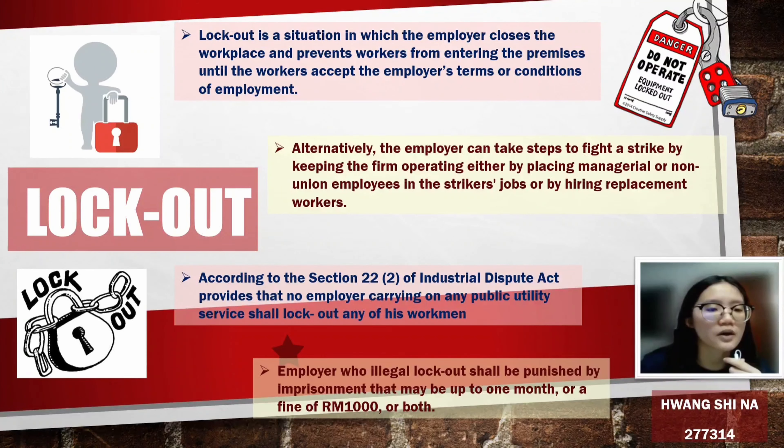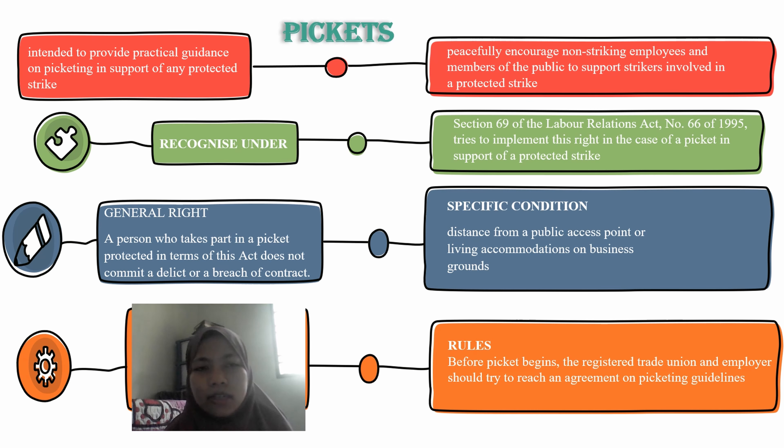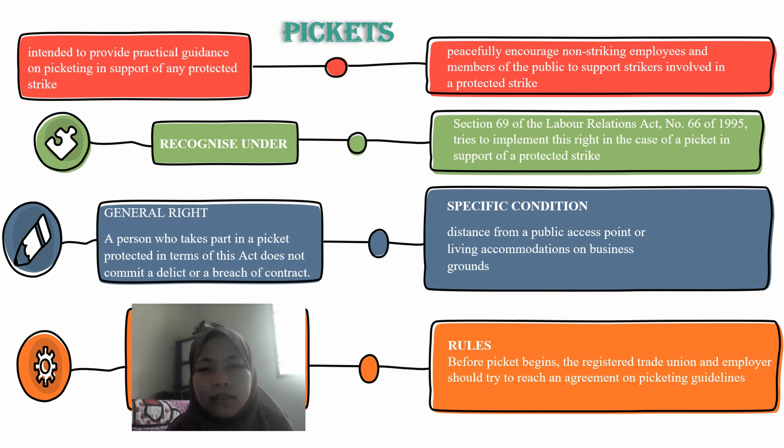Assalamualaikum and hello everyone. My name is Sitimura binti Ishamin, my metric number is 280057. Today I would like to present about picketing. Picketing is intended to provide practical guidance on picketing in support of any protected strike. The purpose of picketing is to peacefully encourage non-striker employees and members of the public to support strikers involved in a protected strike. Picketing is recognized under Section 69 of the Labour Relations Act No. 66 of 1995. A person who takes part in a lawful picket protected under this act does not commit an offence or a breach of contract. The specific condition is that it must be held at a distance from a public access point or leaving accommodation on business grounds.